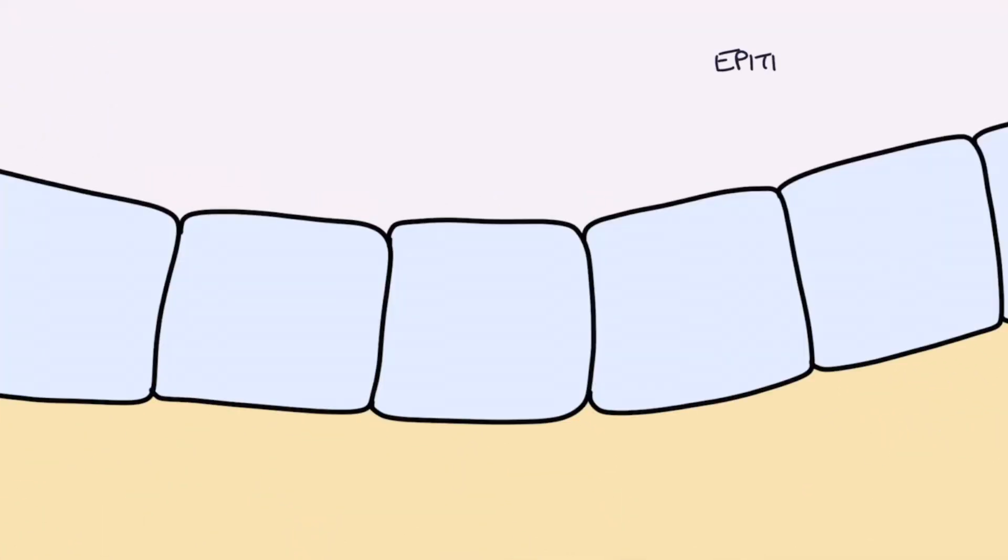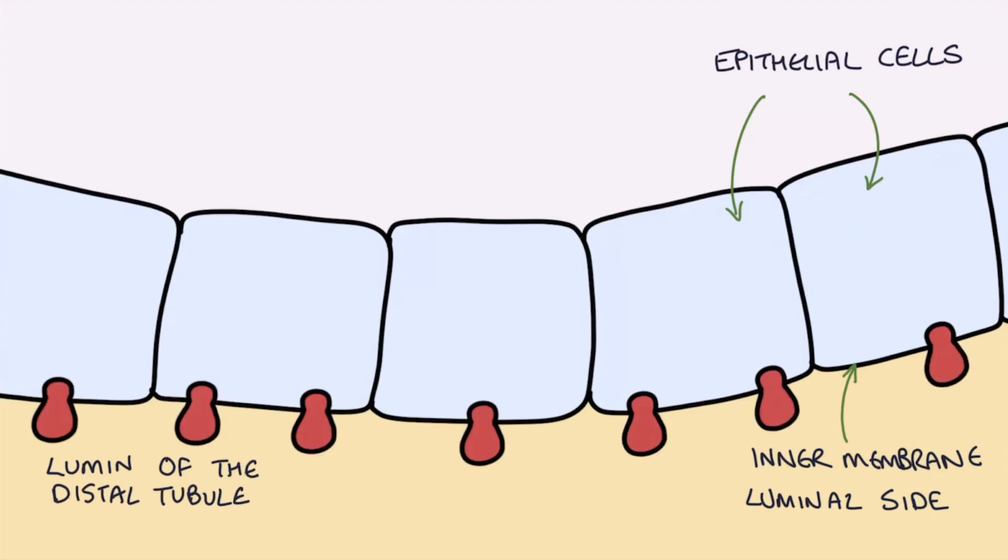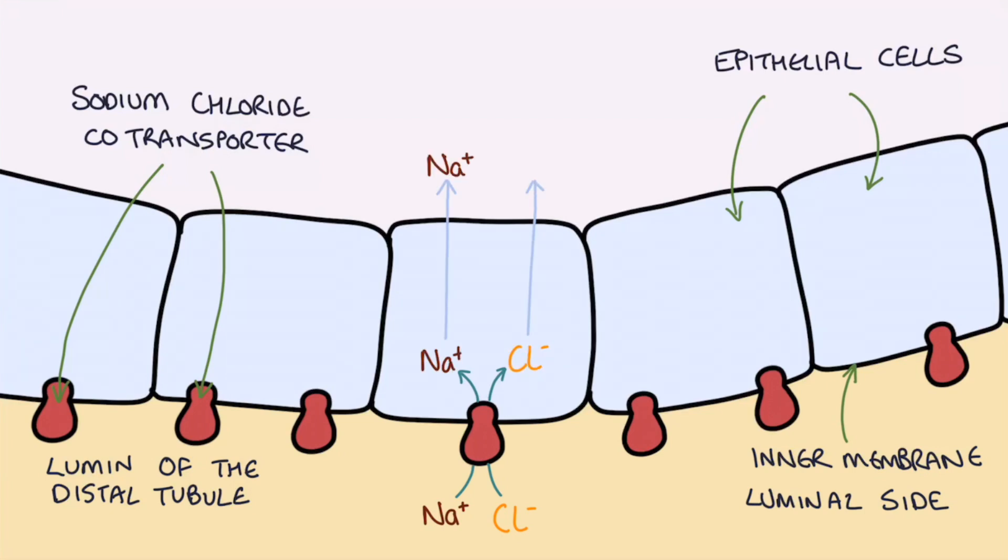Looking at the epithelial cells of the distal tubule, on the inner membrane or luminal side—the side facing the lumen of the distal tubule—there is a sodium chloride co-transporter molecule. This molecule draws sodium and chloride from the filtrate into the cell. Once they're in the cell, the sodium and chloride diffuse out the other side and are reabsorbed into the blood.